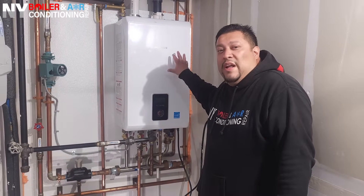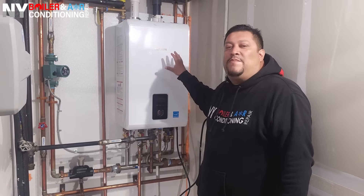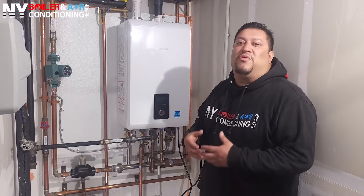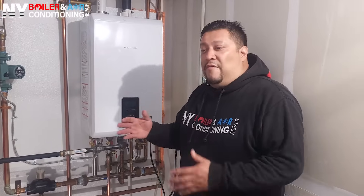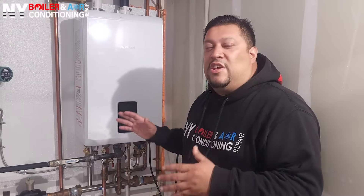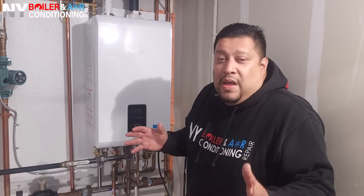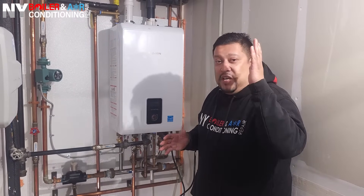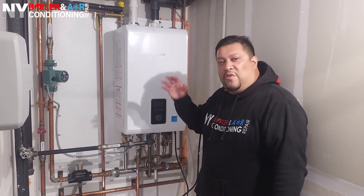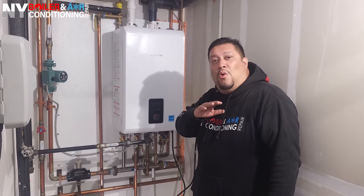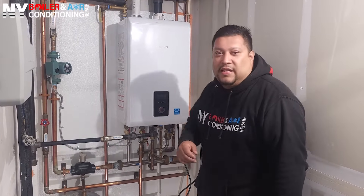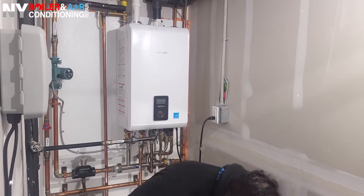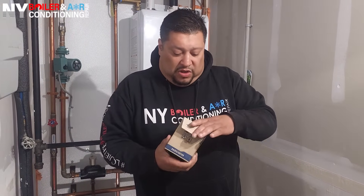This is a bit of a weird call because there is no error code. Typically when something is wrong the boiler gives you an error code and a direction to go in, but in this case there's nothing. So you have to play detective and figure it out. I'm showing you exactly what to look for: if you have a symptom like heat but no hot water, the DHW flow reading is the first place you want to check.